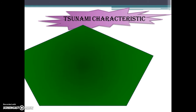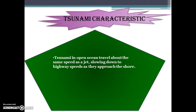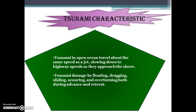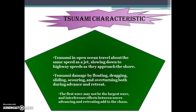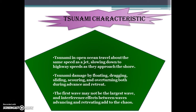Tsunami characteristics. In the open ocean, tsunamis travel at about the same speed as a jet, slowing down to highway speed as they approach the shore. Tsunami damage includes flooding, dragging, sliding, scouring, and overturning, both during the advancing and retreating flow. The first wave may not be the largest wave. The cumulative effect between waves advancing and retreating adds to the overall destruction.